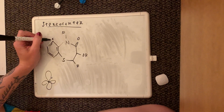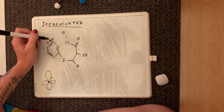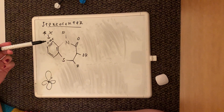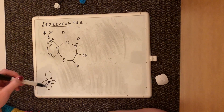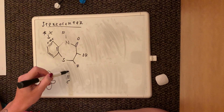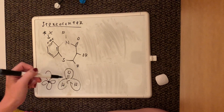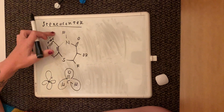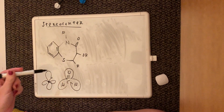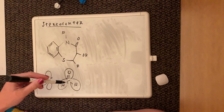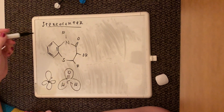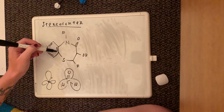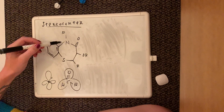This carbon with a double bond is an automatic no — it cannot be a stereocenter because if it has a double bond it can't have four substituents, it can only have three. Anything with a double bond is automatically not a stereocenter. Don't waste your time; something with a double bond won't have four substituents, period.